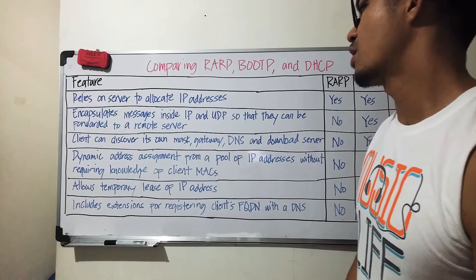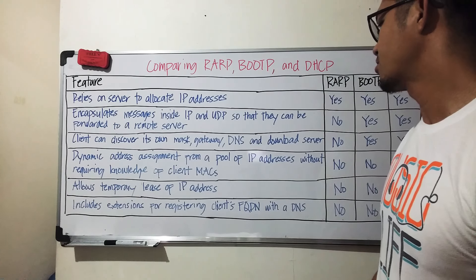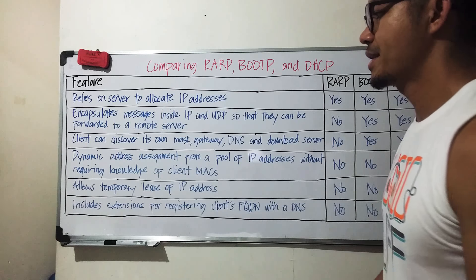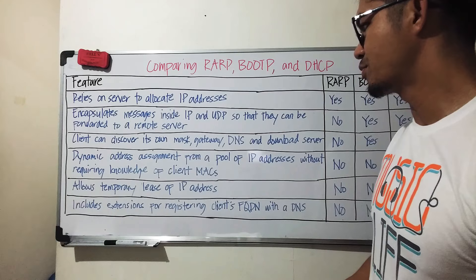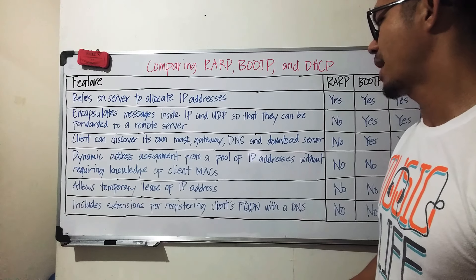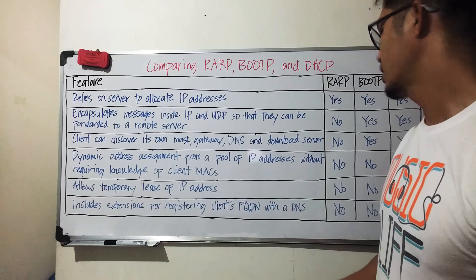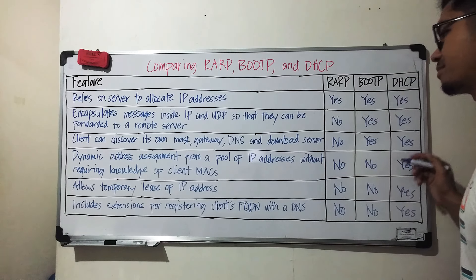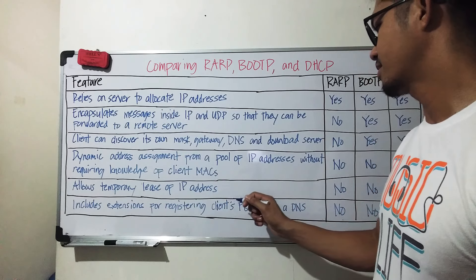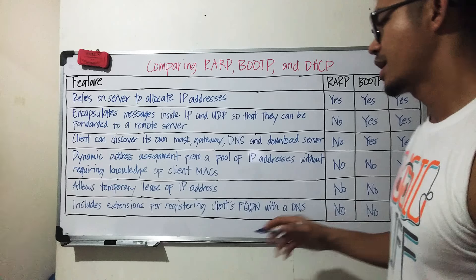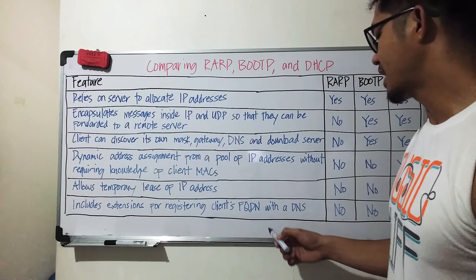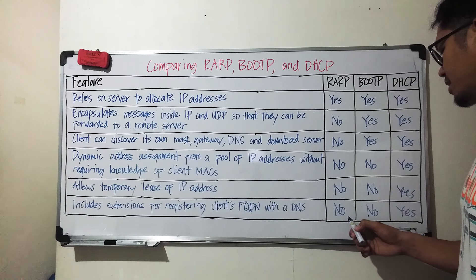Third feature: client can discover its own subnet mask, gateway, DNS, and download server — no, yes, yes. Fourth feature: dynamic address assignment from a pool of IP addresses without requiring knowledge of client MAC address — no, no, yes. Fifth feature: allows temporary lease of IP addresses — no, no, yes. Sixth feature: includes extensions for registering clients' FQDN with DNS — no, no, yes.